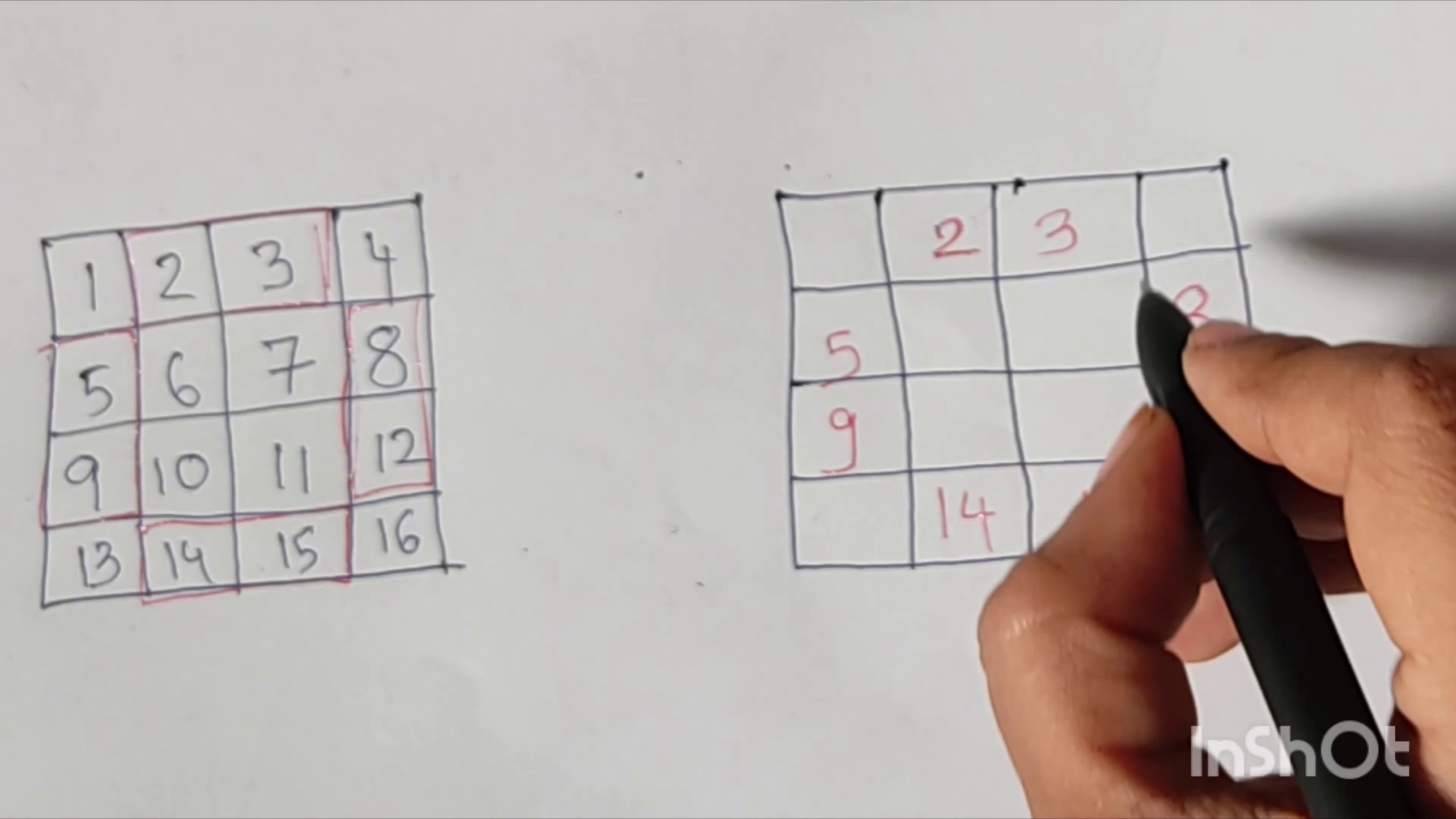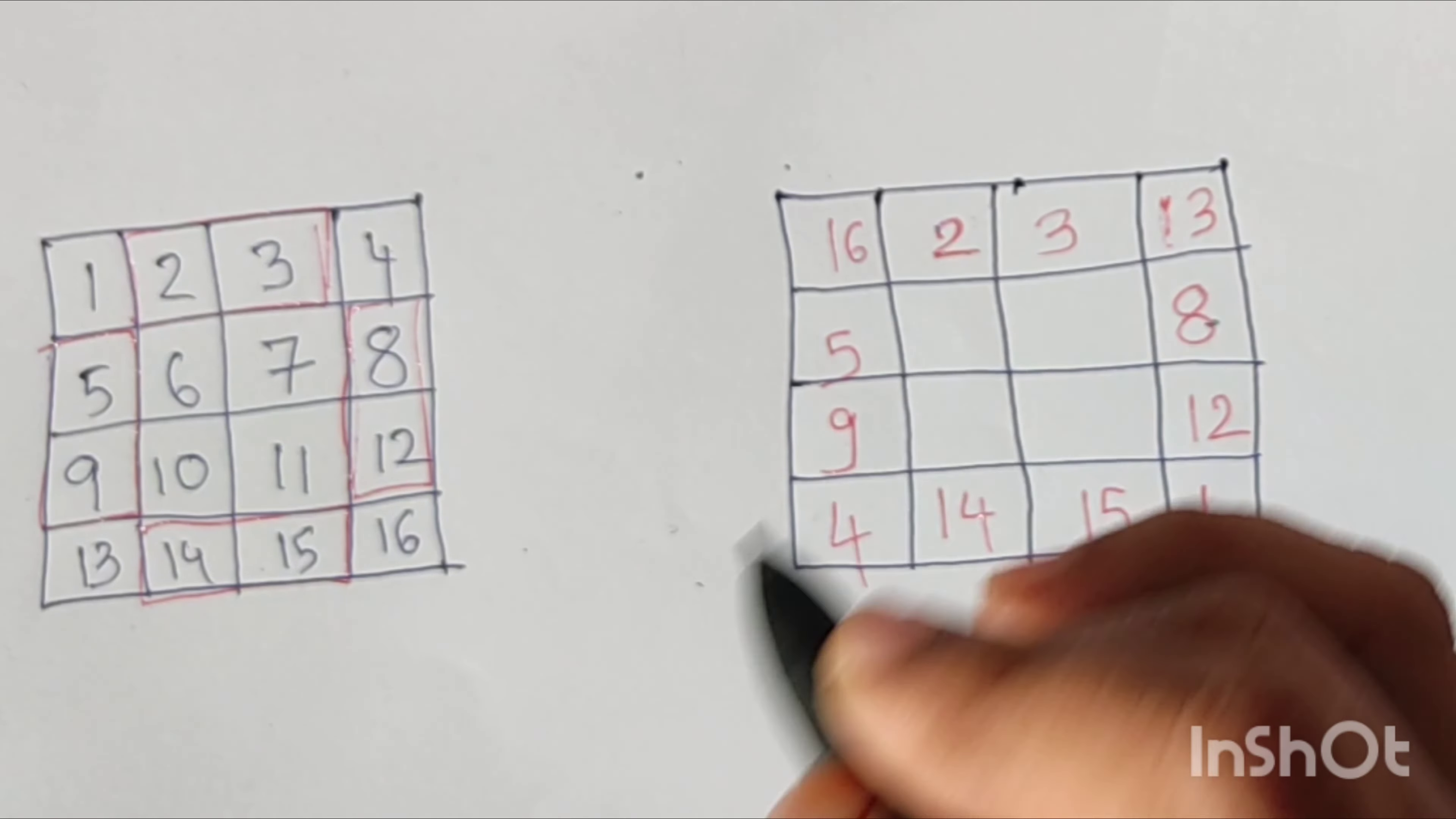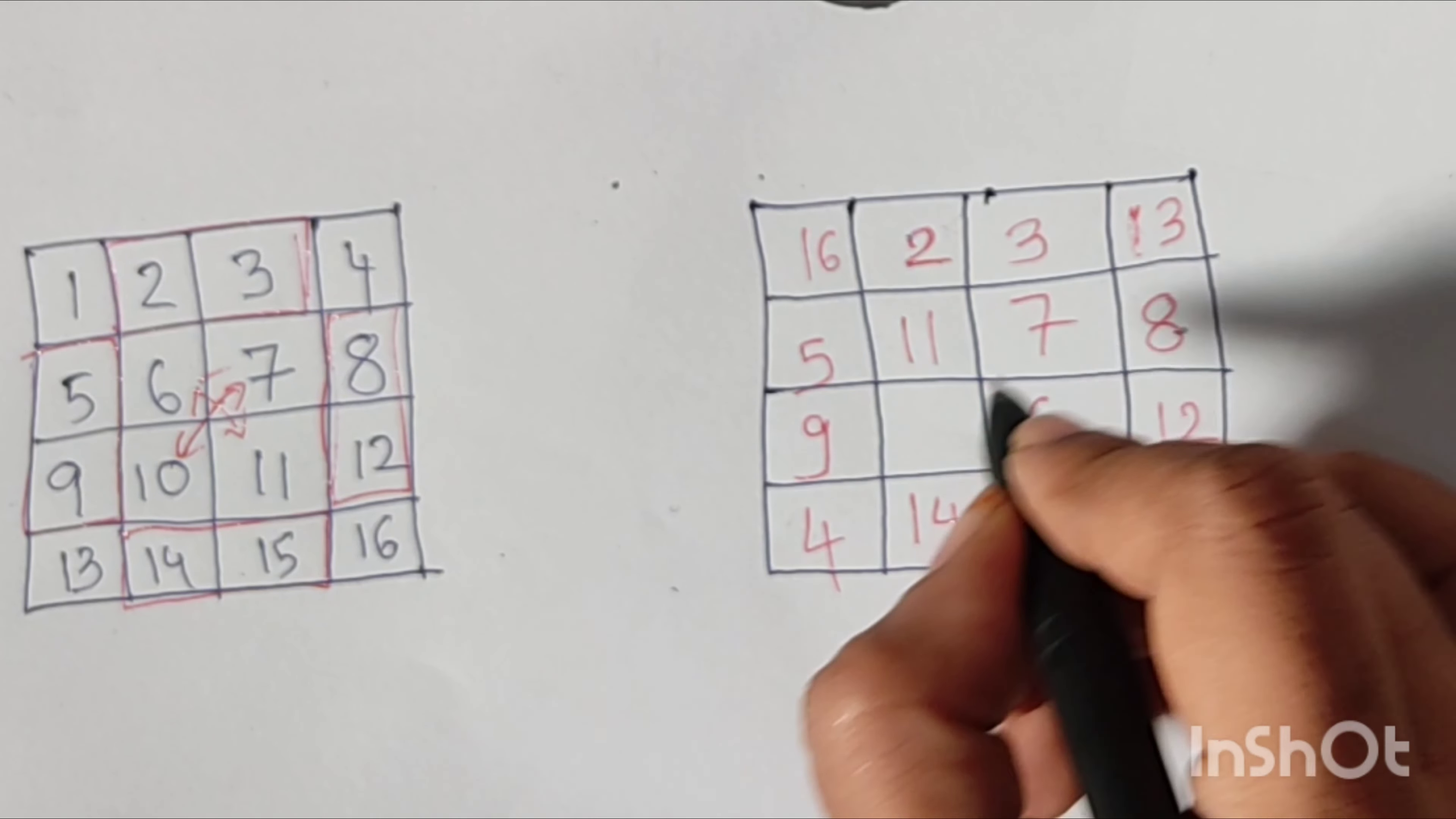Then for the diagonals or corners you have to interchange the positions like 13 to 4 and 4 to 13, 1 to 16 and 16 to 1. And for the inner square also we have to change the positions in diagonal direction, that is 7 to 10 and 6 to 11.